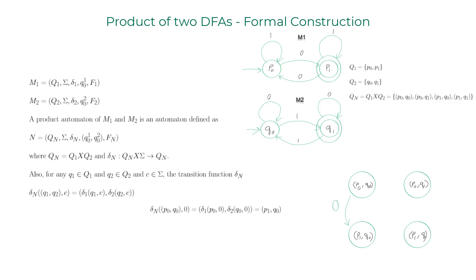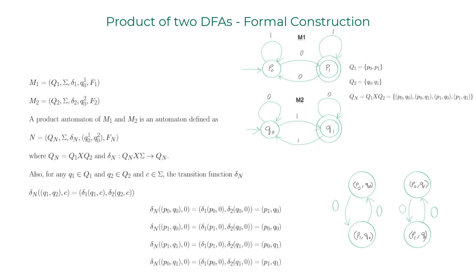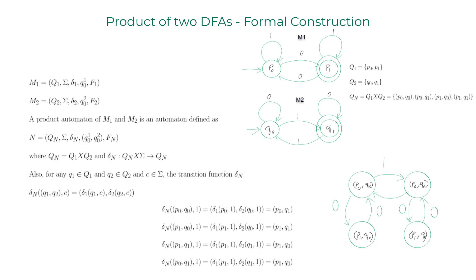Repeating for (p1, q1) on input 0 gives (p0, q1); repeating for (p0, q1) on input 0 gives (p1, q1). We repeat the same procedure for input character 1, computing all the transitions for each state pair and using those results to draw the complete DFA diagram.